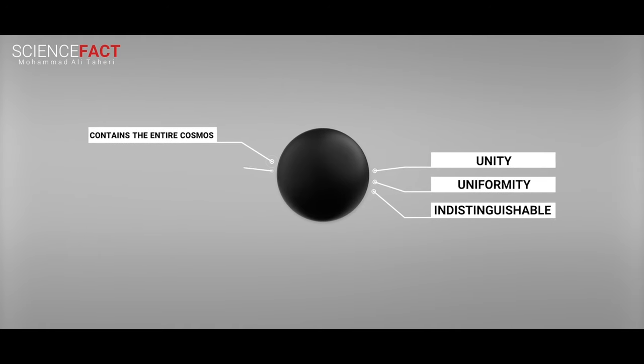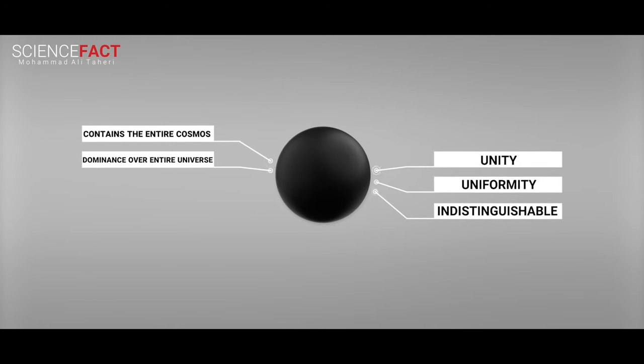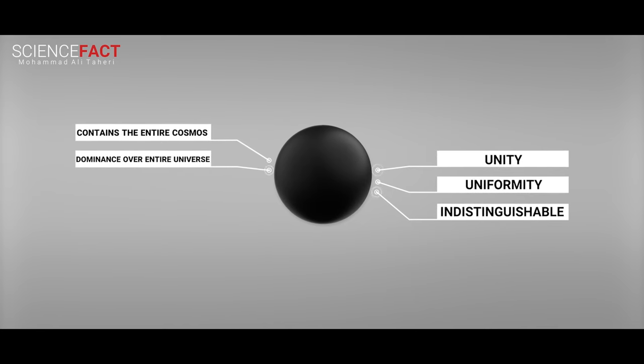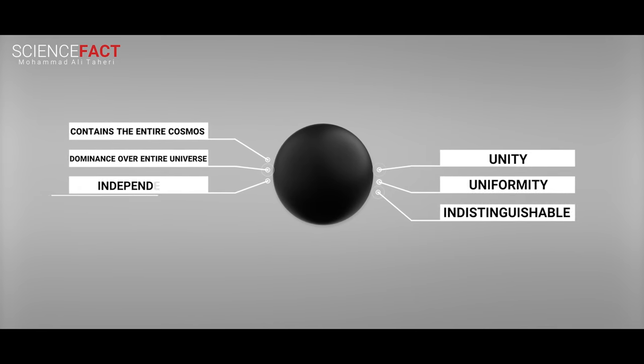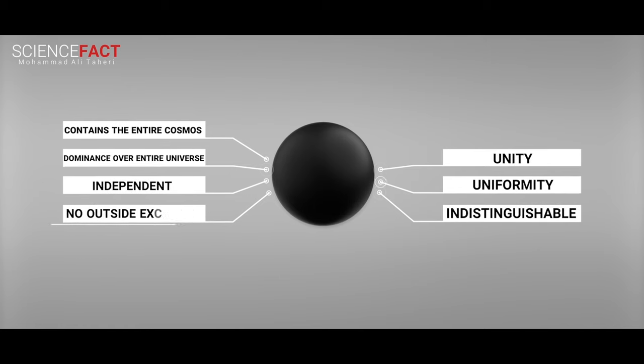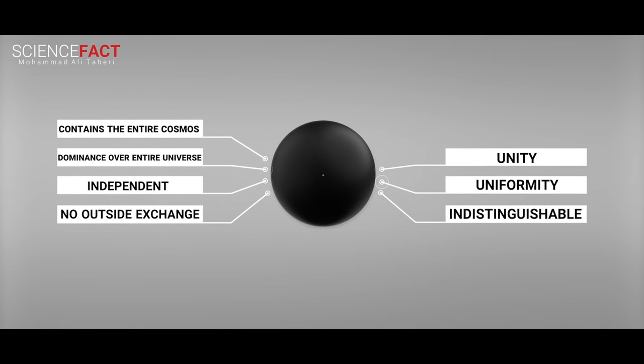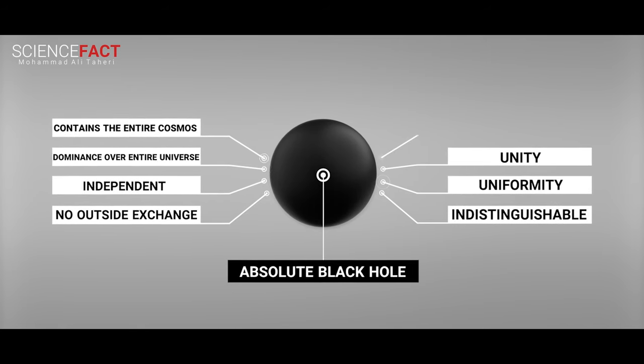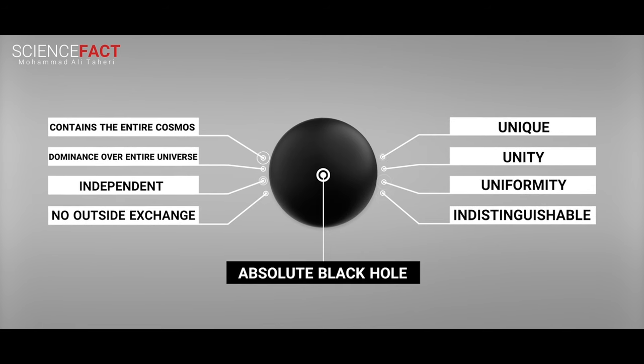But the cosmic black hole contains the entire cosmos inside itself. Everything inside is in unity, uniformity, and indistinguishable. Due to its dominance over the entire material universe, the cosmic black hole is independent, has no outside exchange, and is, consequently, an absolute black hole that is utterly unique.